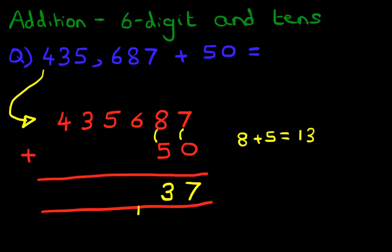Now, we've got the hundreds column. We've got 6 plus nothing but we have got 1 here. So, 6 plus 1 is 7.